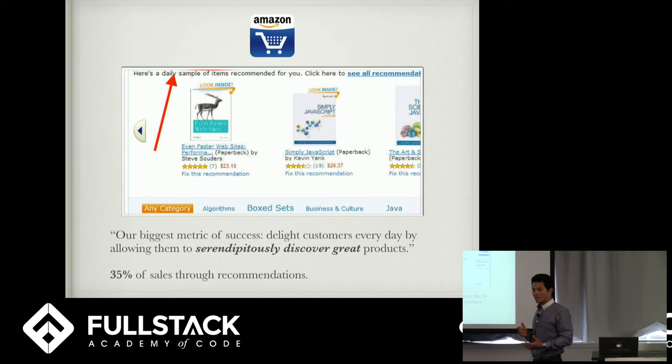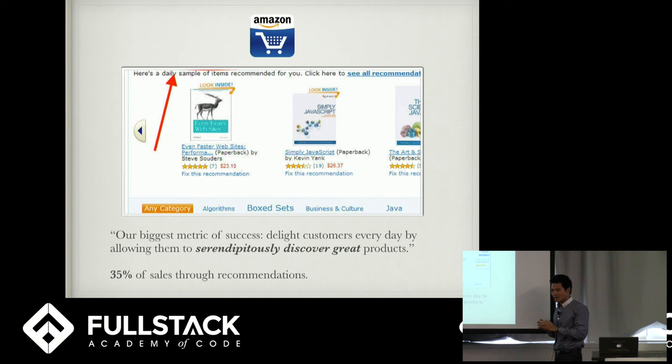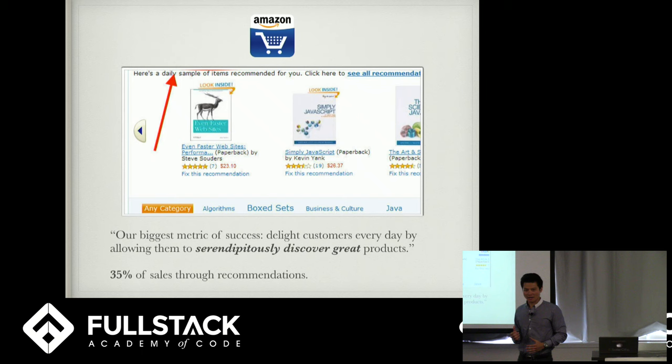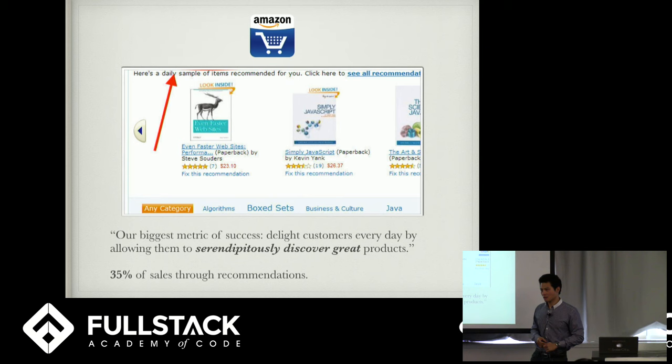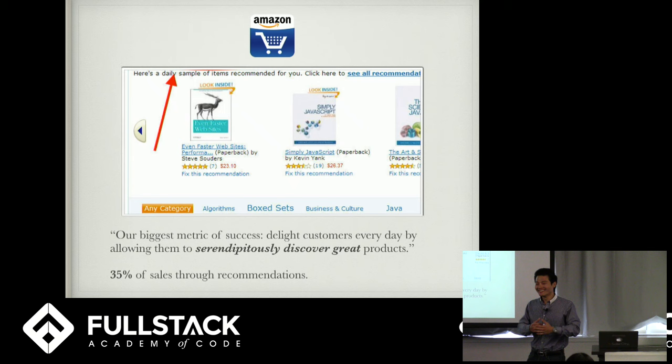Amazon in 2011 had $9.9 billion in annual sales. In 2012, they made $13 billion in annual revenues. That year Amazon released an article about their recommendation engine — they credited a lot of their success to it. 35% of sales went through recommendation. For example, if you buy a camera, you don't even know you need a memory card or a camera case, but if Amazon suggests it, chances are you're going to add it.